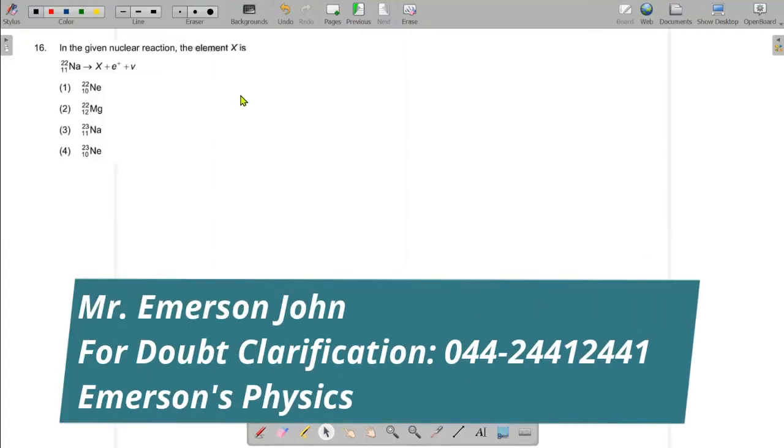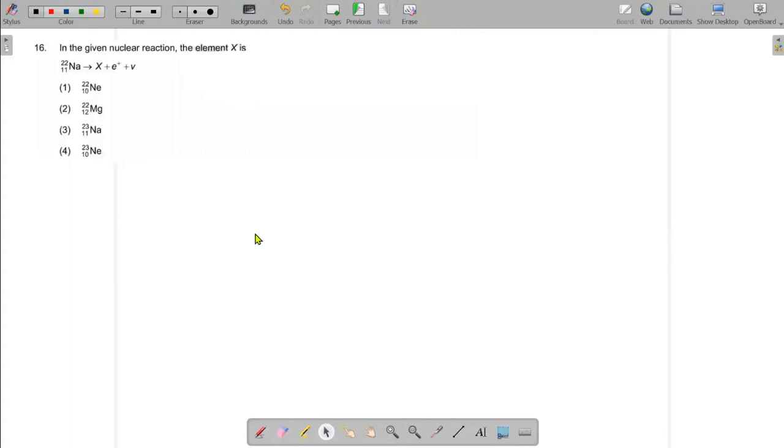In the question, in the given nuclear reaction, element X is some balance. So Na-22-11 is converted into X by emitting, it is clear, a positron plus one.